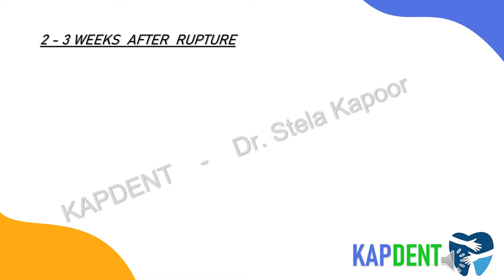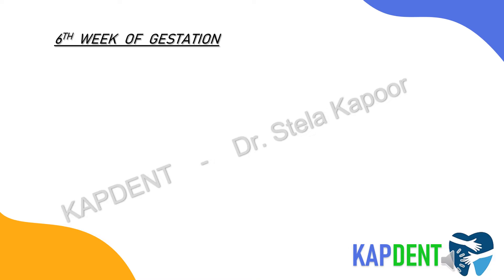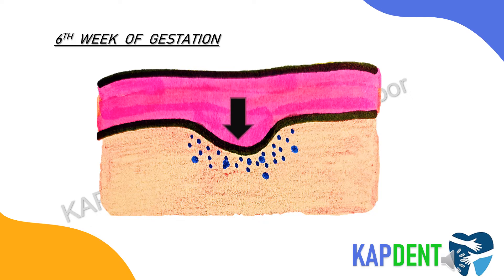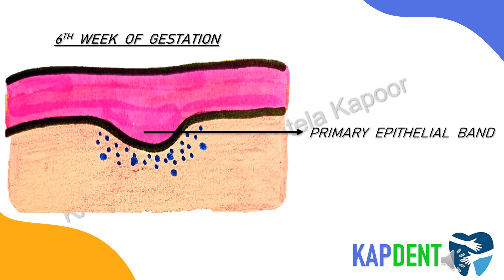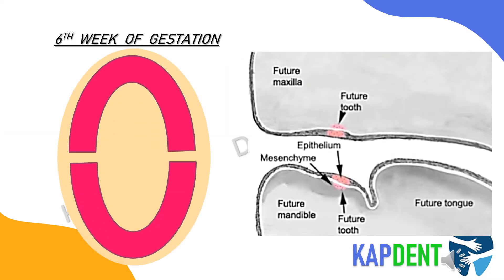Around 2 to 3 weeks after the rupture of the buccopharyngeal membrane, or when the embryo is around 6 weeks old, certain basal cells of the oral ectoderm proliferate more rapidly to form a primary epithelial band. This is the epithelium which has invaded the underlying tissues, and it forms two arch-shaped structures corresponding to the upper and lower arches.